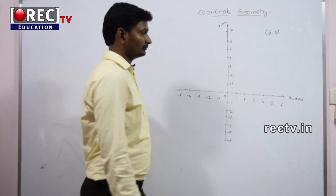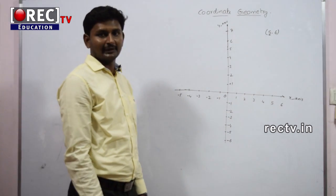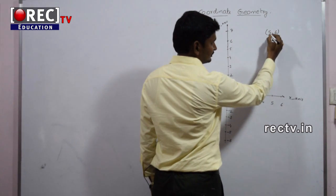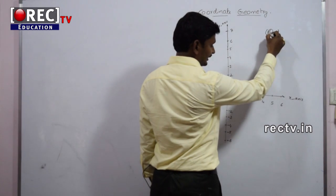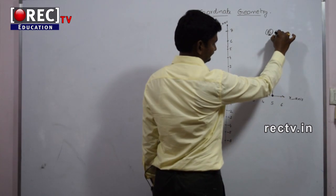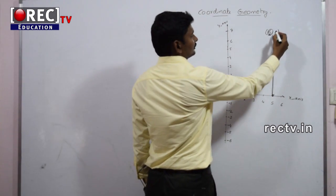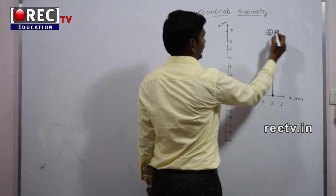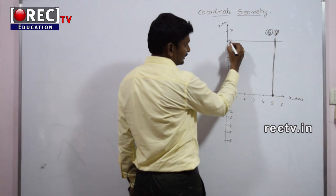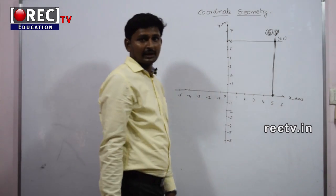Plotting a point: consider the point (5, 6). We have to locate that on the coordinate axis. The X coordinate is 5 and the Y coordinate is 6. First, we mark X coordinate 5 on the X axis and draw a perpendicular line at that point. Next, we mark Y coordinate 6 on the Y axis and draw a perpendicular line. The point of intersection of both these perpendicular lines gives the location of the required point (5, 6).